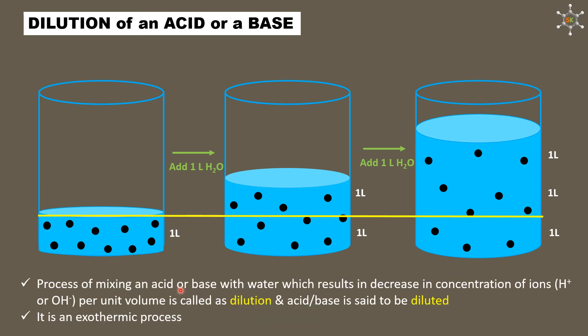To put it in proper terms, dilution means process of mixing an acid or base with water which results in decrease in concentration of ions per unit volume and we say acid or base is diluted. Unit volume means it may be 1 ml, 1 liter, 1 gallon or anything in terms of 1. Dilution of an acid or a base is an exothermic process meaning heat gets liberated during the dilution.